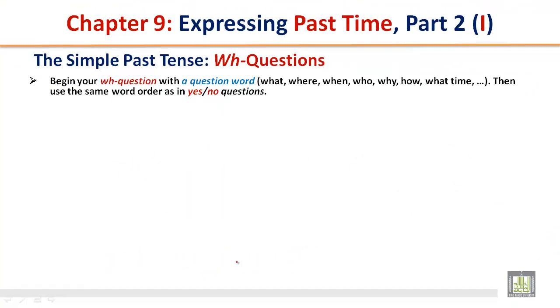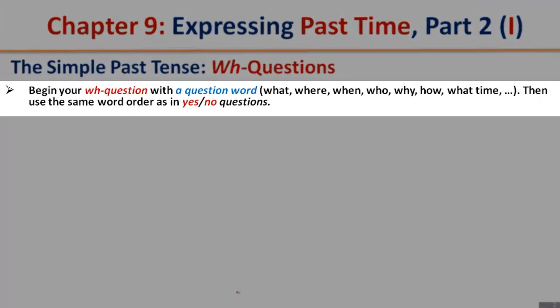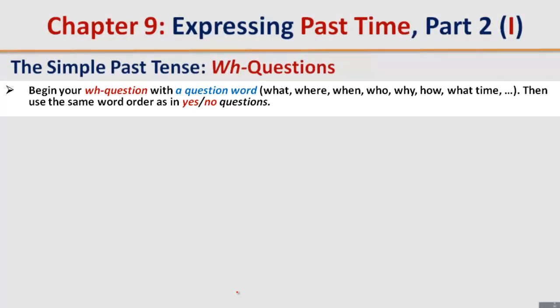The simple past tense WH questions. Begin your WH question with a question word: what, where, when, who, why, how, what time. Then use the same word order as in yes or no questions.